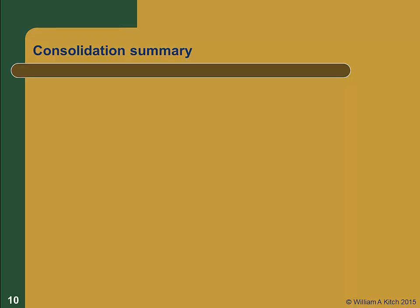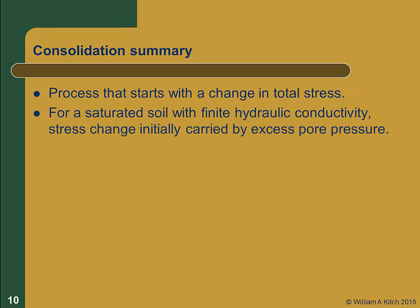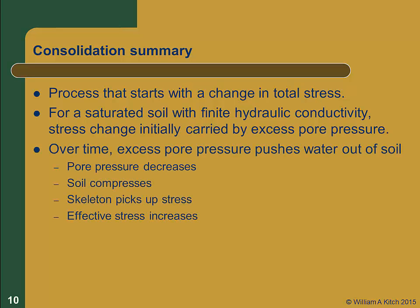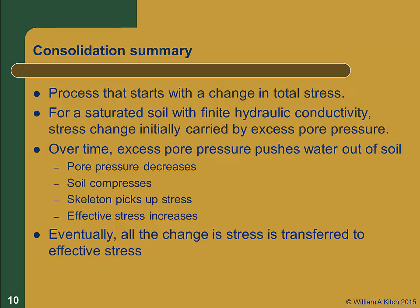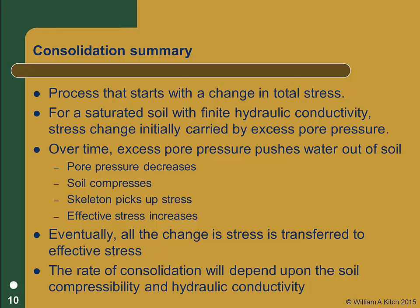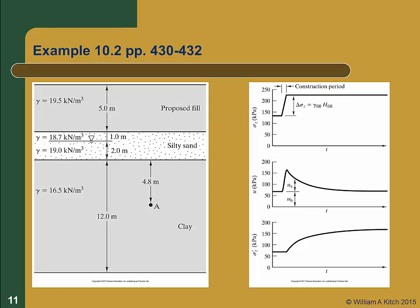Let's summarize. Consolidation settlement is a process that starts with a change in total stress. For a saturated soil with finite hydraulic conductivity, the change in stress must initially be carried by the pore water pressure, creating excess pore pressure. With time, water is forced out of the soil due to the excess pore pressure. As water leaves, the pore water pressure is reduced and the soil compresses. As the soil compresses, the skeleton is able to pick up the additional stress and the effective stress increases. In the end, all of the increase will end up as effective stress. The soil compressibility and hydraulic conductivity will control how fast the soil consolidates. Example 10.2 in your text goes through the process of computing change in effective stress during consolidation for the soil profile shown here. You should go through this example before class.